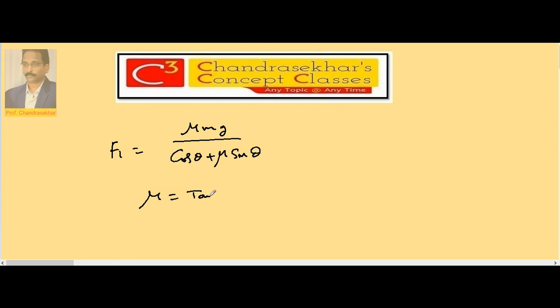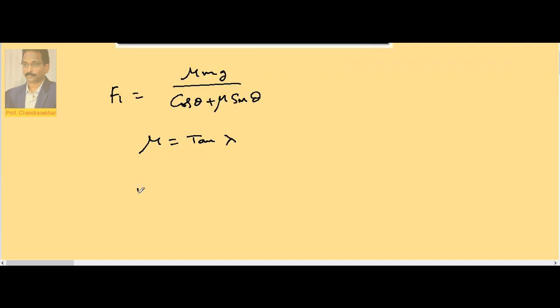Suppose if I take mu as tan lambda, where lambda is the angle of friction, then F1 becomes equal to tan lambda into Mg divided by cos theta plus tan lambda into sin theta.